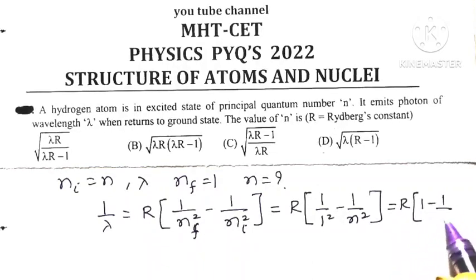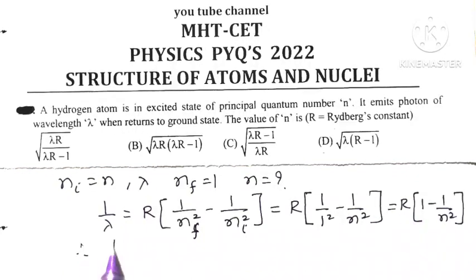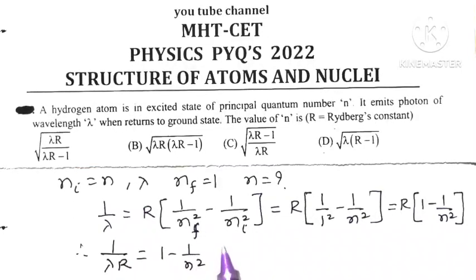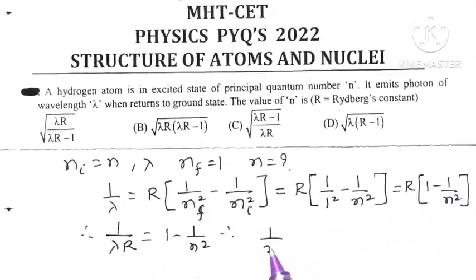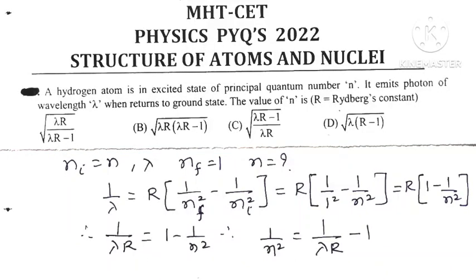That equals R in bracket (1 minus 1 upon n squared). Taking R to the other side: 1 upon lambda R equals 1 minus 1 upon n squared. Therefore, 1 upon n squared equals 1 upon lambda R minus 1.